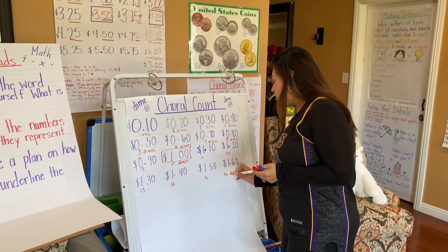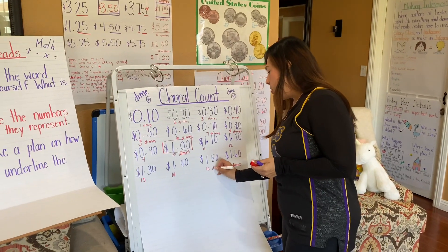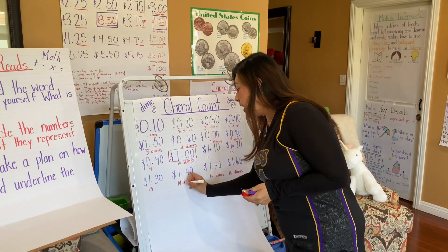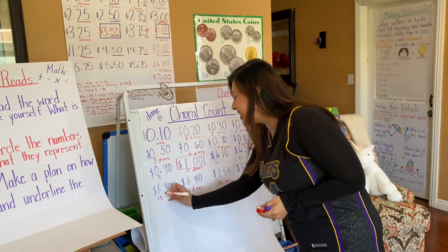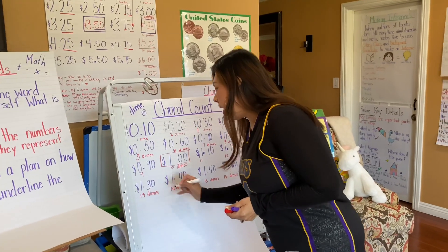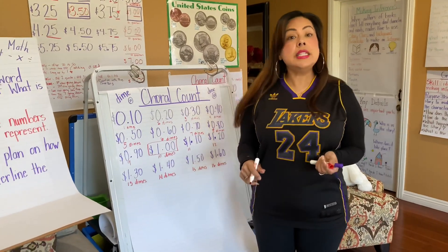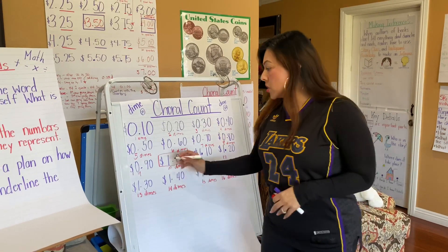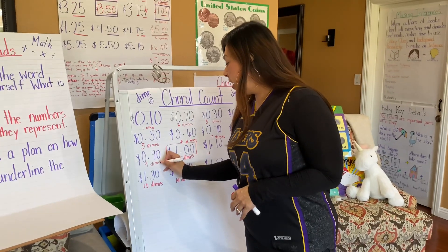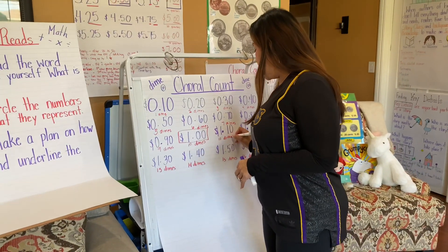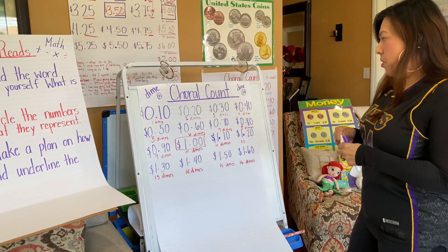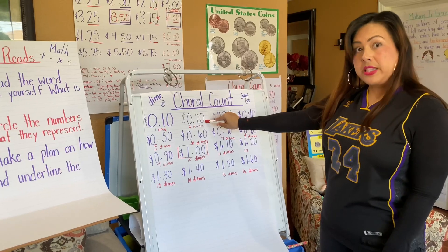So, boys and girls, we have a pattern. When we do a choral count with dimes, it's the same as counting by tens — why? Because one dime is the same as 10 cents, so we're counting by tens. Are there any other patterns that you see? Let's take a look. When we go to the right, it increases by 10.